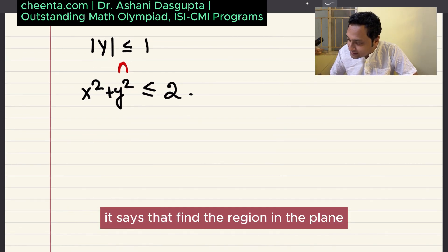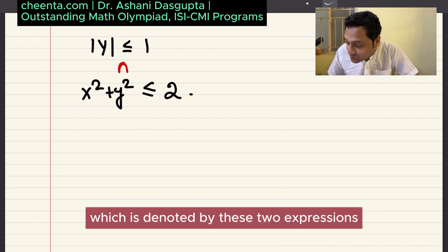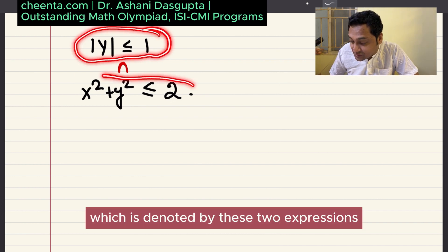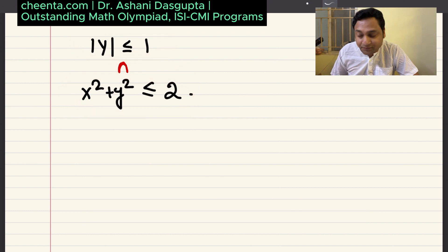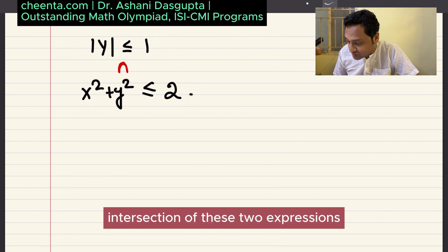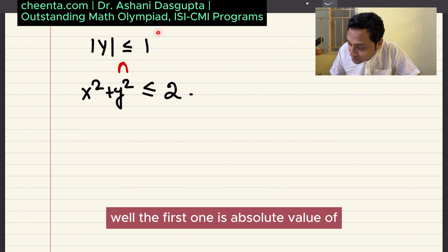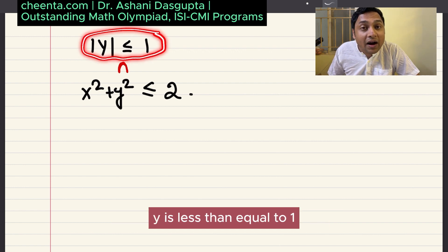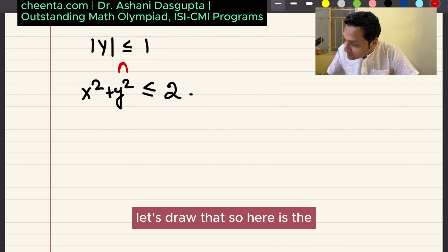It says that find the region in the plane, which is denoted by these two expressions, intersection of these two expressions. The first one is absolute value of y is less than or equal to 1. Let's draw that.